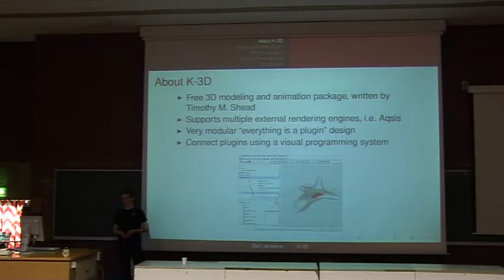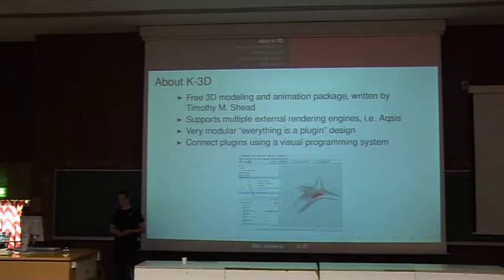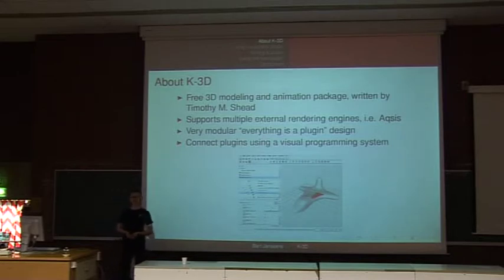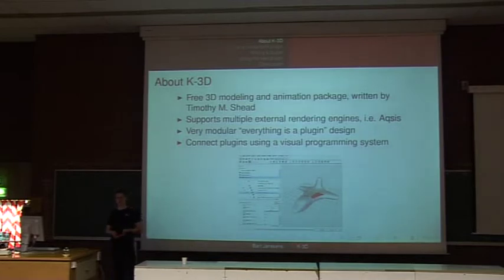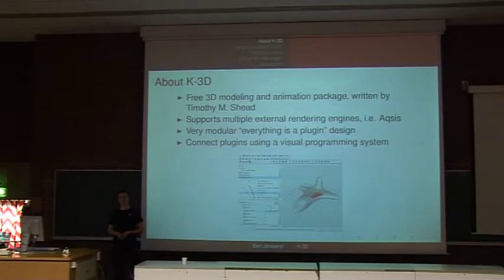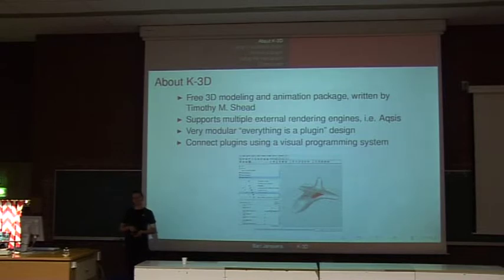So, what is K3D? It's a free 3D modeling and animation package written by Tim Shad, who started the project around 1992. K3D does modeling and animation. For the actual rendering, it relies on external rendering engines such as Axis, which implements the Pixar Renderman interface. Renderman engines are supported out of the box, and there are also plugins for some non-Renderman engines. It has a very modular design where basically everything is a plugin, including the user interface. The different plugins interact through a fairly unique visual programming system, allowing you to make a tree which interconnects different nodes.